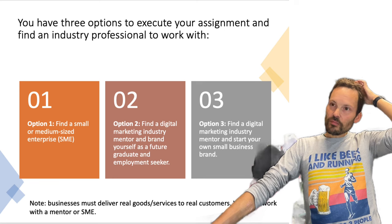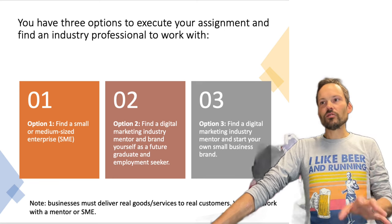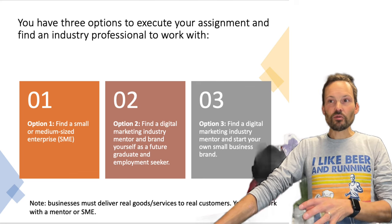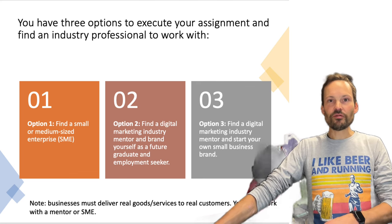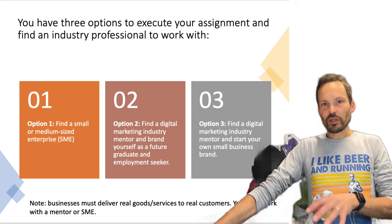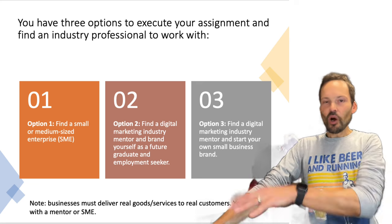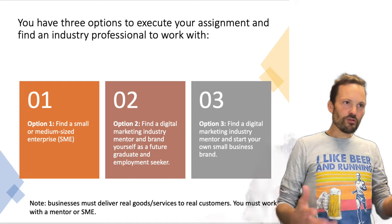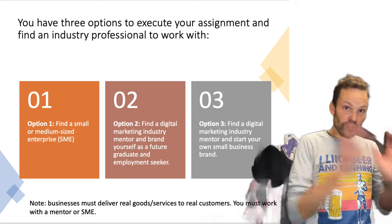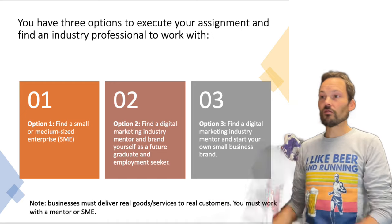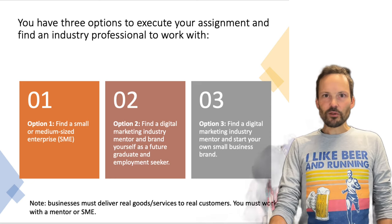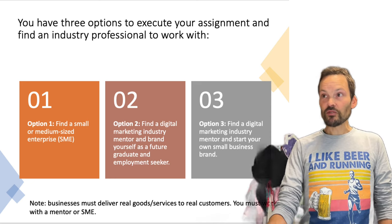For options one and three in particular, real goods or services need to meet real customers at the end of it. If you're building a business, you need to be confident that at the end there will be customers buying your products in some form. There's some exchange between you as the business and customers at the other end — you can't make a fake business for option three.